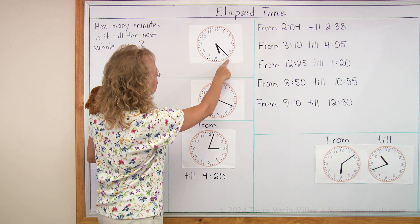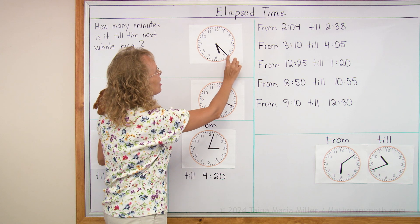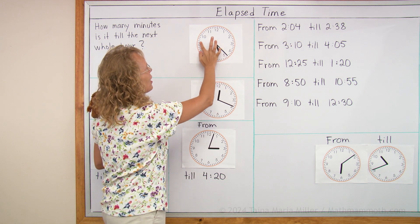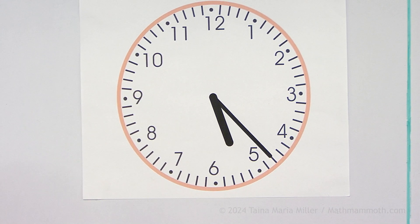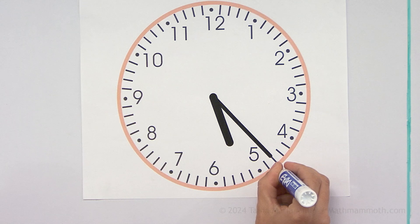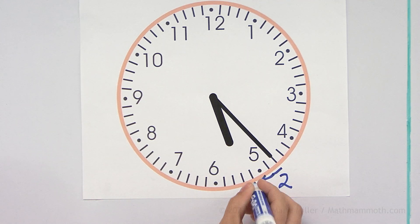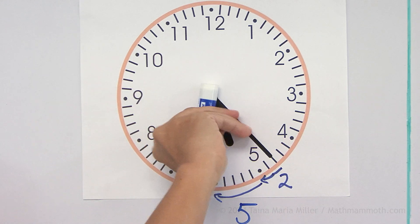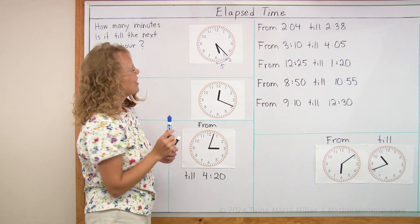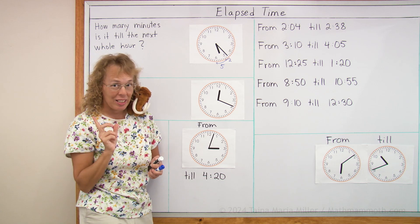We don't need to know what time it is exactly. We just need to figure out the minute hand moving from here all the way over there. I can do that in several parts. First, this much is two minutes. And then from this to this, there would be five minutes. And then from here till there would be half an hour. So in total we get 30 minutes and five and two — 37 minutes.